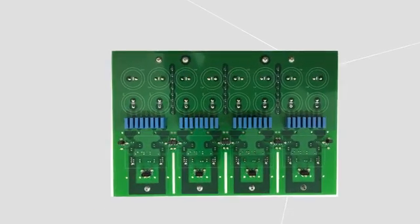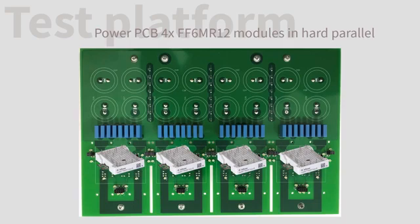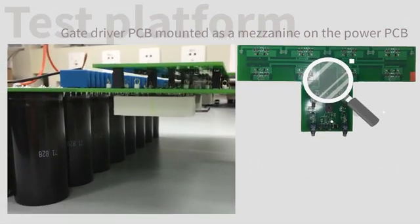Let's review a platform that was designed and built to evaluate the performance of modules operating in parallel. As you can see, the test platform has a dual PCB construction with four 6-milli-ohm EZ2B modules connected in parallel on a main power section with a gate driver PCB mounted on top as a mezzanine.